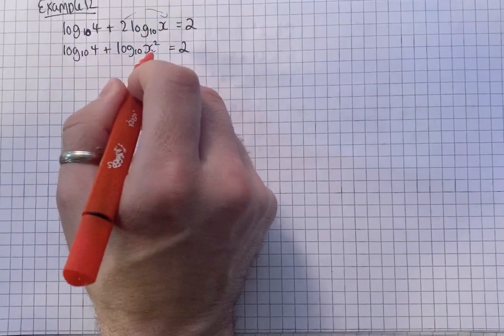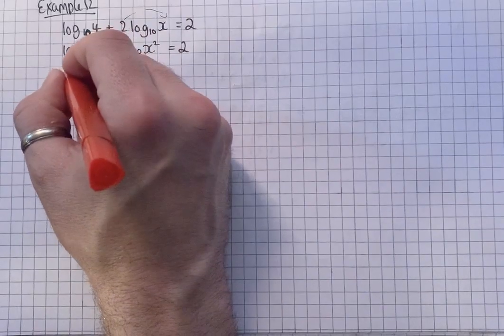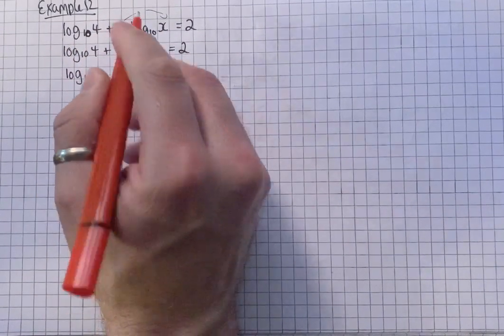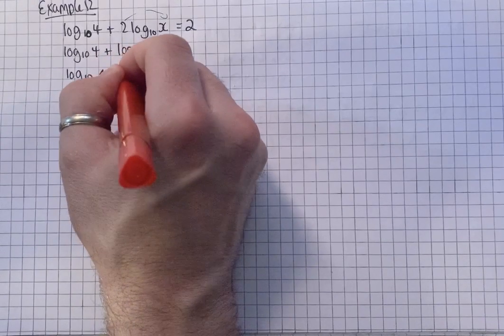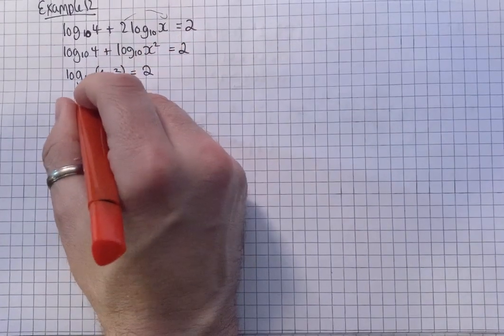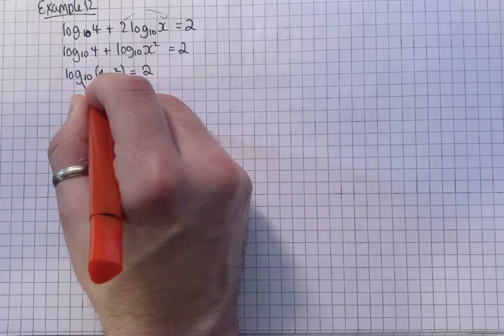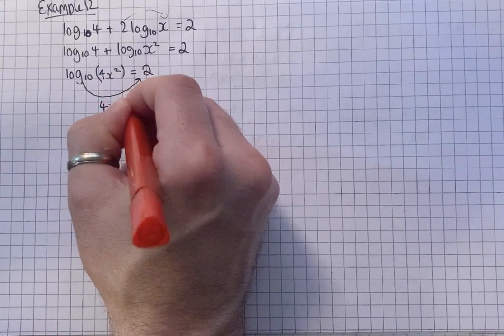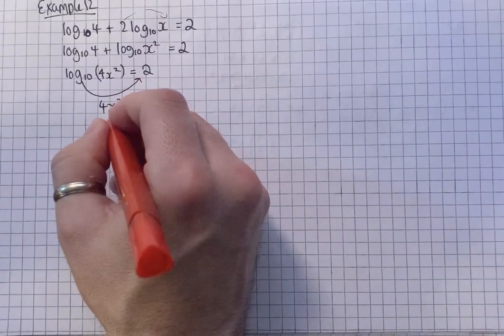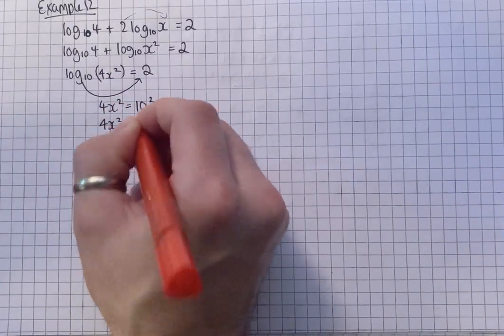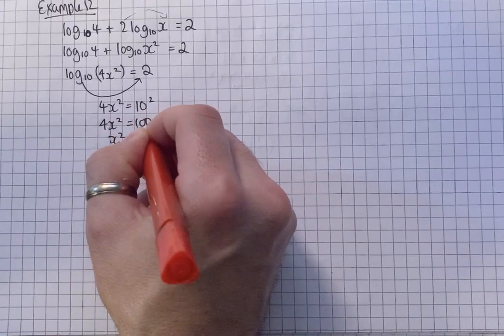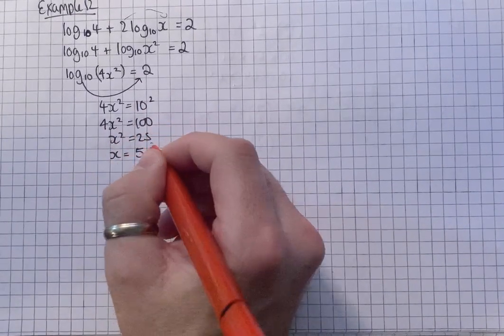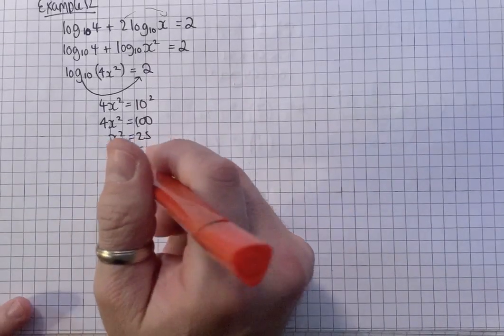Now I can create a single logarithm using the multiplication rule. So it's just going to be 4 times x squared, which is obviously 4x squared. I can now bring the logarithm over. So log to the base 10 becomes 10 to the power of. So 4x squared equals 100. X squared equals 25. X equals 5.